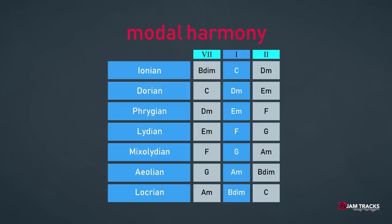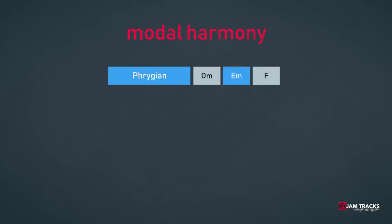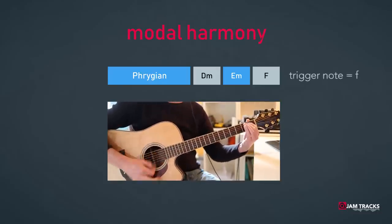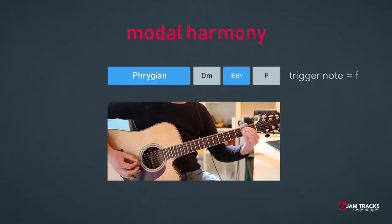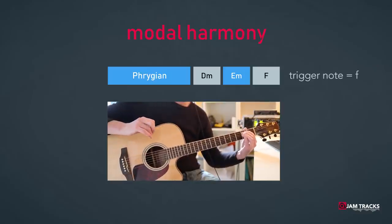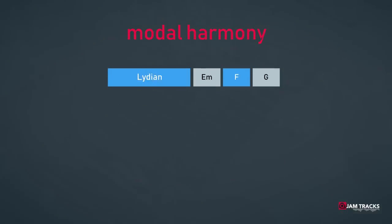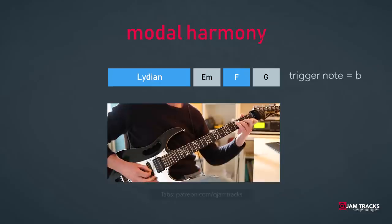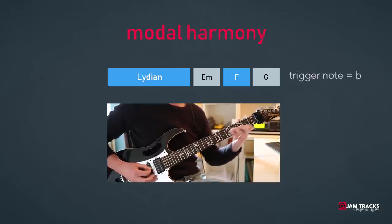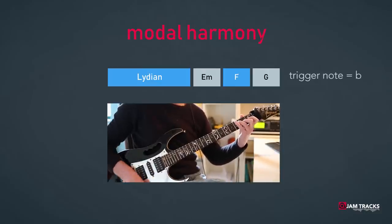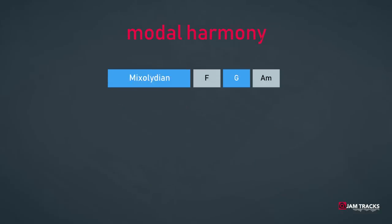Here are some examples of using lateral modal chords in modal progressions. E Phrygian: E minor in conjunction with D minor and F major chord — the note F is the characteristic note. F Lydian: F major in conjunction with E minor and G — B is the characteristic note. G Mixolydian: G major in conjunction with F and A minor chord — the note F is the characteristic note.